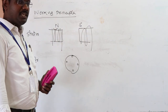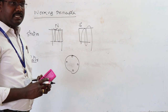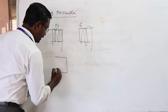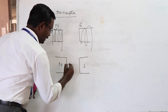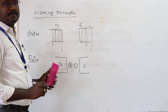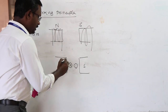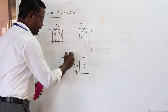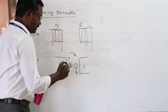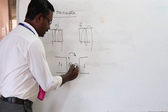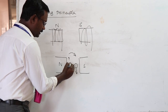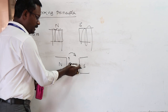The motor working principle is: whenever a current-carrying conductor is placed in a magnetic field — with north pole and south pole — a force is experienced. The cross symbol indicates current moving into the plane, and the dot indicates current coming out of the plane, like the tip and tail of an arrow.